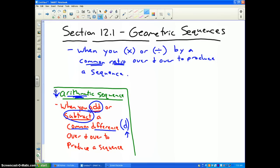Arithmetic is add and subtract. Geometric is multiply or divide. Now just like the arithmetic ones, there are formulas for recursive and explicit.